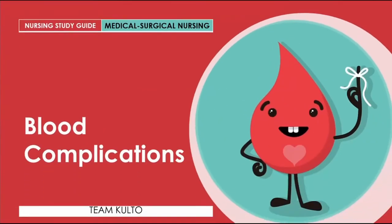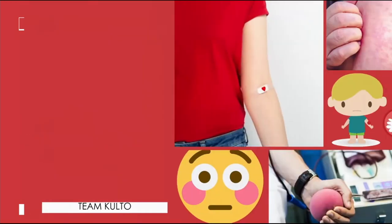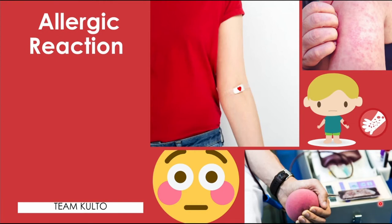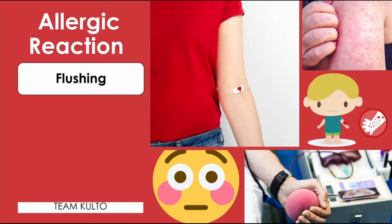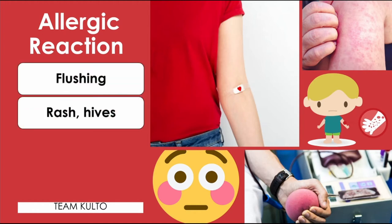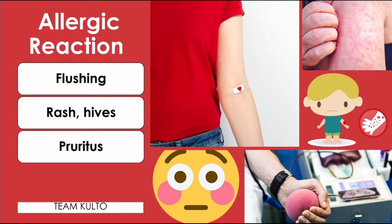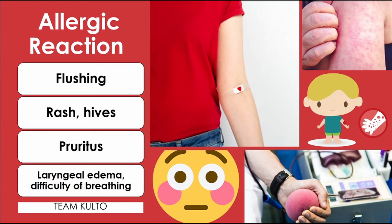On this slide, we're going to discuss the blood transfusion complications and signs and symptoms of each complication to help you with your assessment findings. First: allergic reaction. The antibody of your donor reacts to the antigen of your recipient — they are not matching — causing an allergic reaction. Signs and symptoms to assess for include: flushing, rash, or hives; pruritus; laryngeal edema; and difficulty breathing.